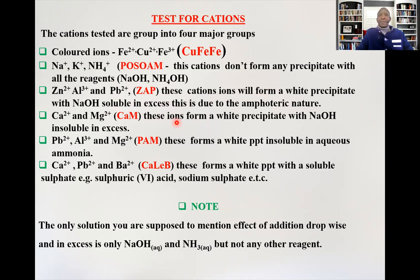The PALM group — lead, aluminium, magnesium — form a white precipitate which is insoluble in excess aqueous ammonia. The lead/barium group form a white precipitate with a soluble sulfate, such as sulfuric acid or sodium sulfate.